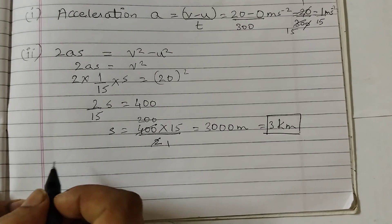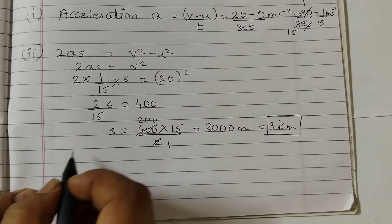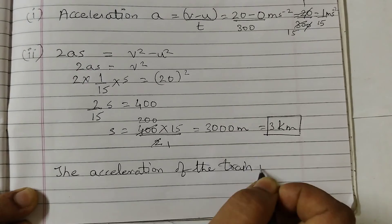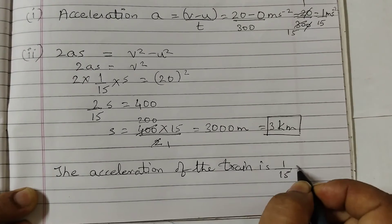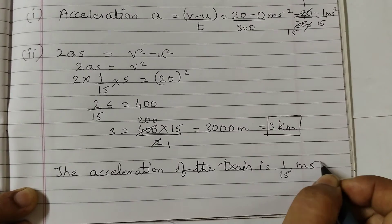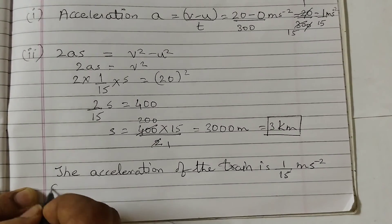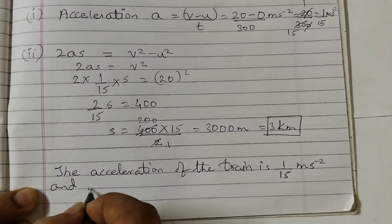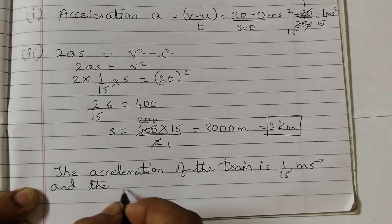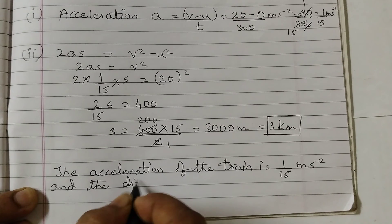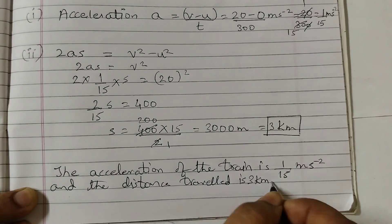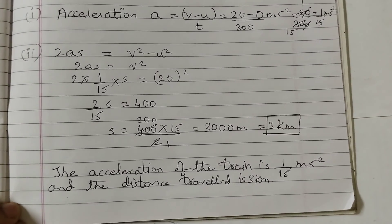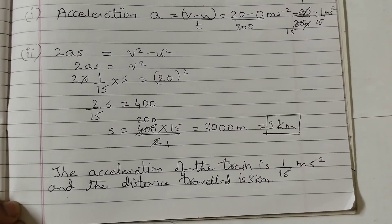So the acceleration of the train is 1/15 meters per second squared, and the distance traveled is 3 km. I hope this is clear to all. Thank you.